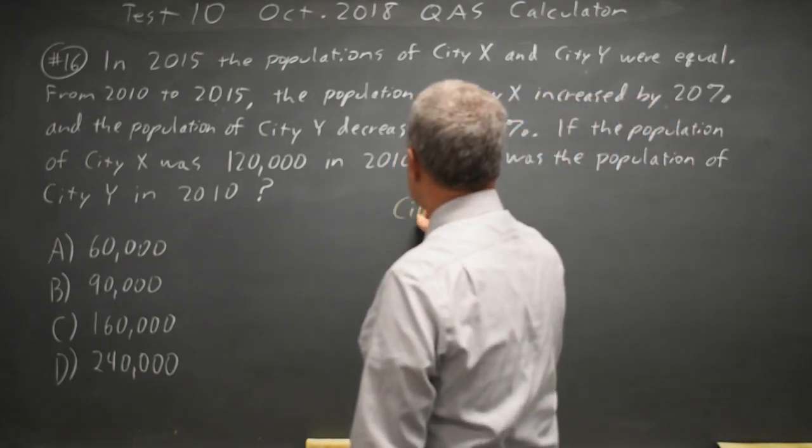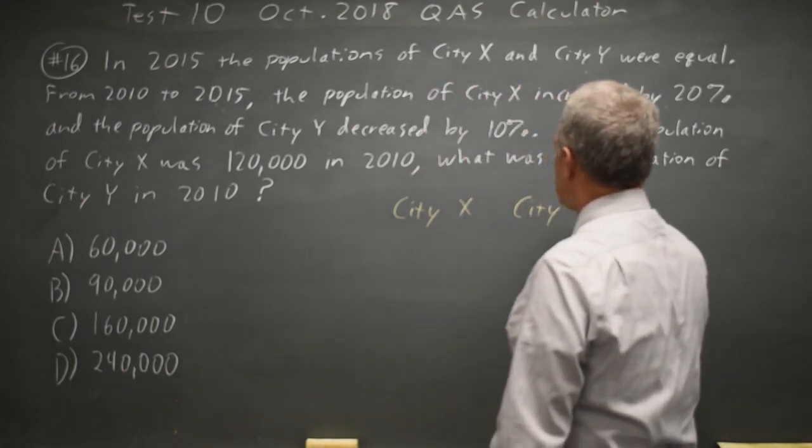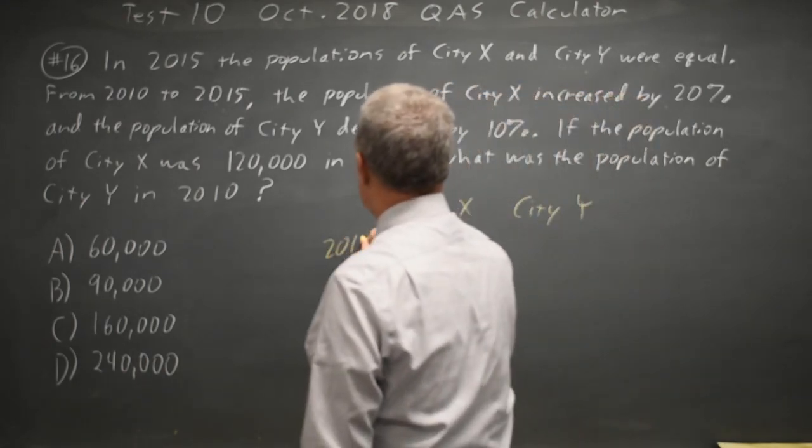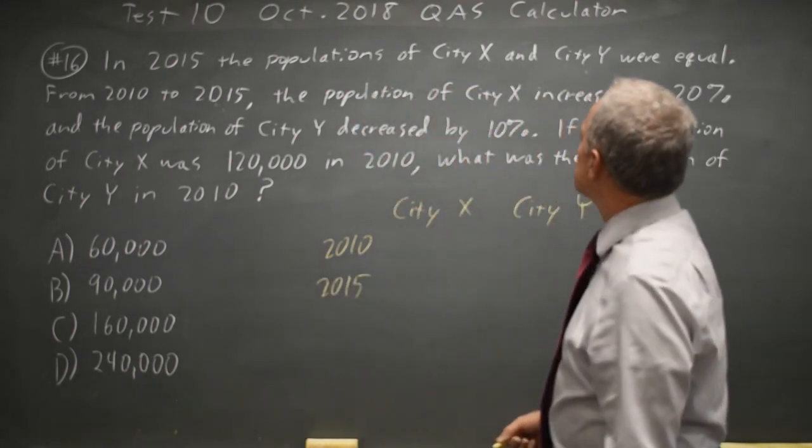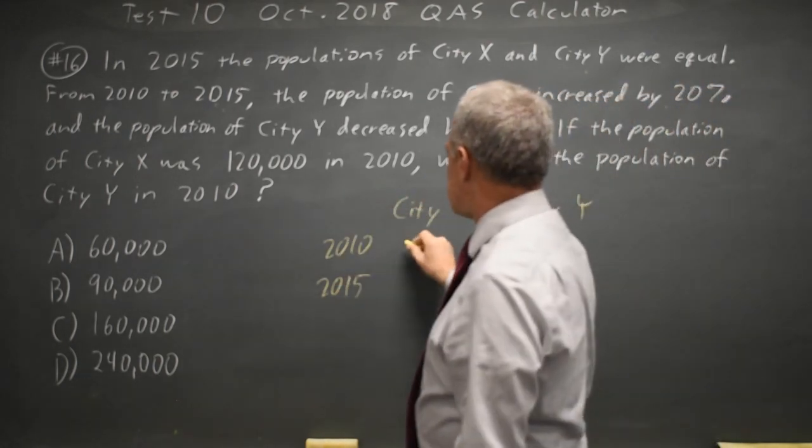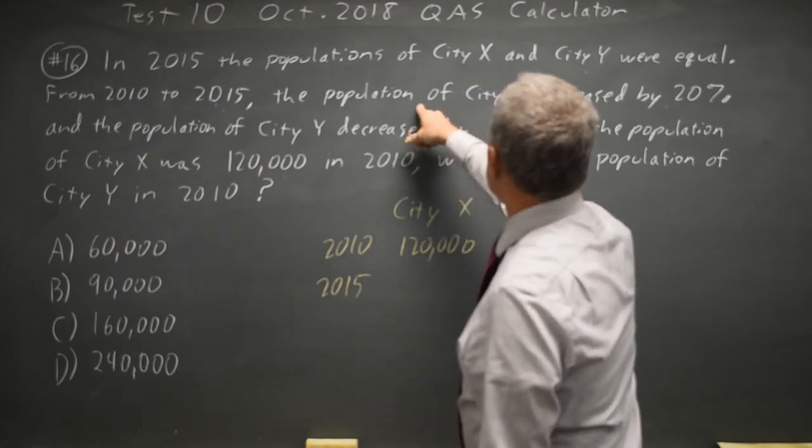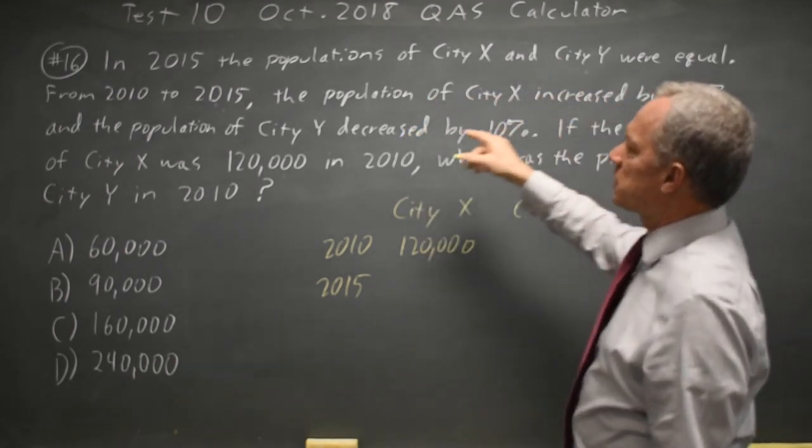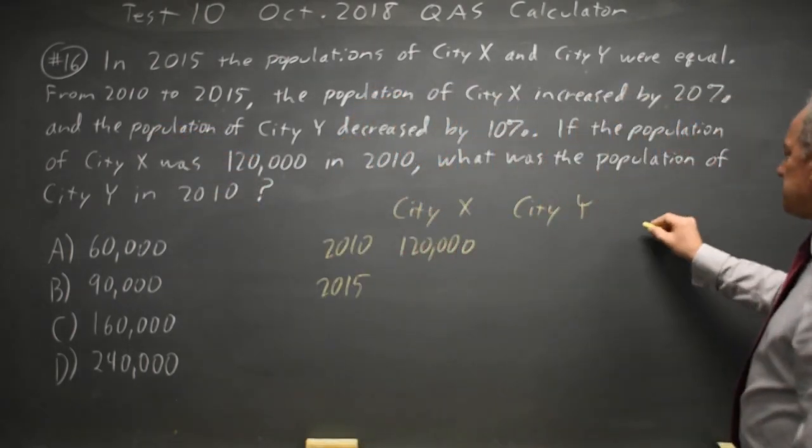We have City X and City Y, and we have 2010 and 2015. City X is 120,000 in 2010, and the population of City X increases by 20% from 2010 to 2015.